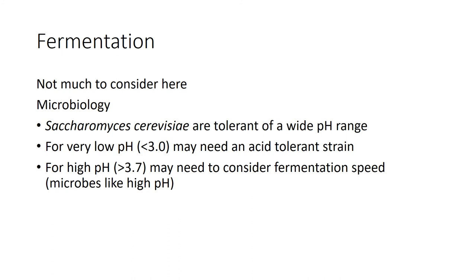During primary fermentation, this isn't a critical control point, but we should consider microbiology. Saccharomyces cerevisiae is tolerant to a wide pH range, but for very low pH — closer to 3 — you may need to select a pH-tolerant strain. For high pH, you may need to consider fermentation speed or methods of slowing things down if you want more extraction time, since higher pH wines make it easier for Saccharomyces to grow and ferment more vigorously. Also consider that if a microbe got a foothold early, it could be competing with Saccharomyces during primary fermentation at high pH.